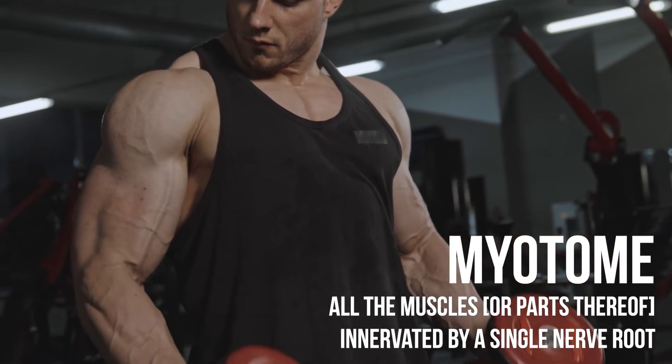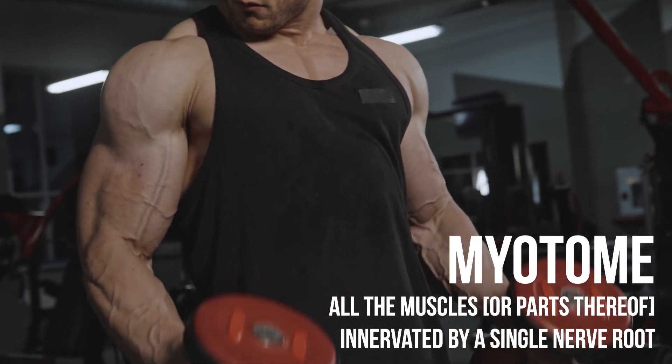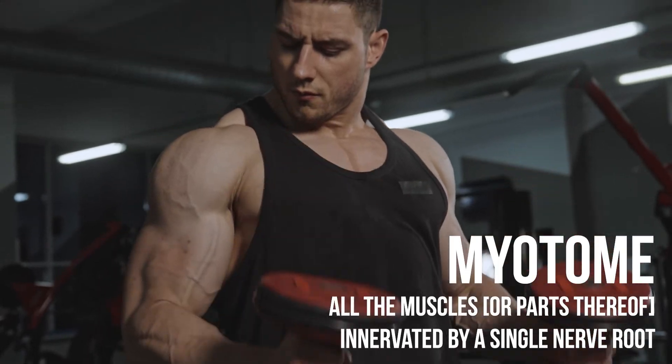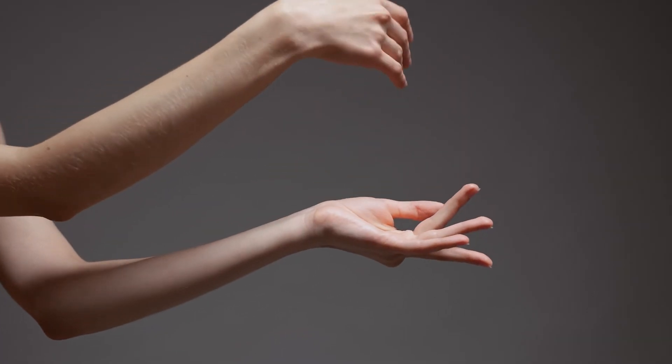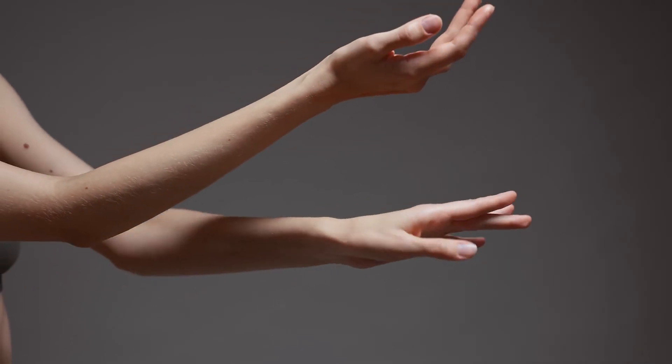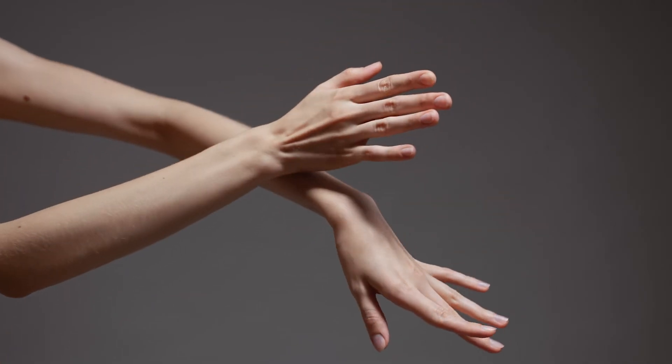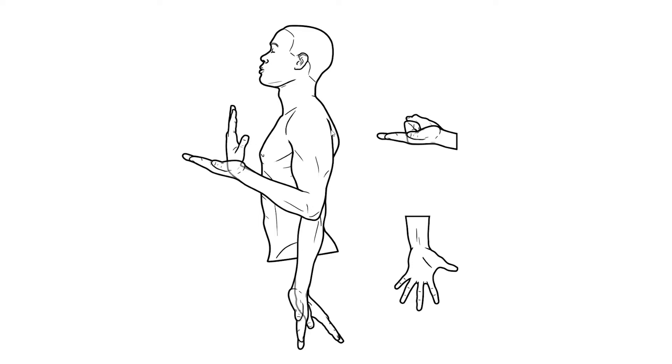The myotomes are all the muscles, or parts thereof, innervated by a single nerve root. These muscles often have a similar location. However, clinically it's often more helpful to think of them in terms of the movements they control. So in this illustration, we taught the major movements of the upper limb. Each of these are primarily controlled by one or sometimes two nerve roots.